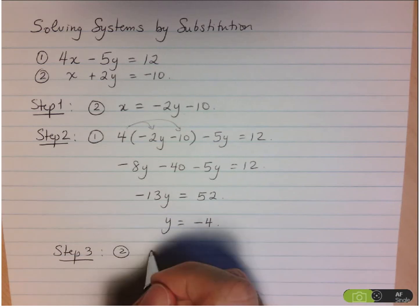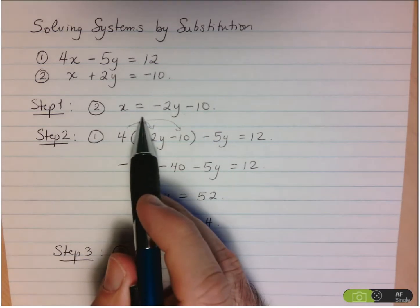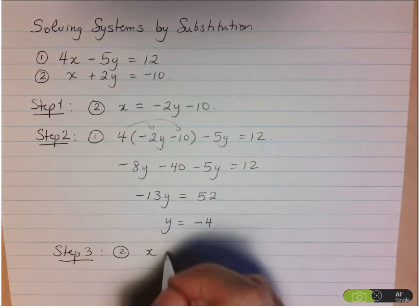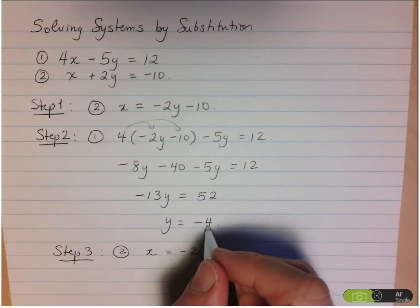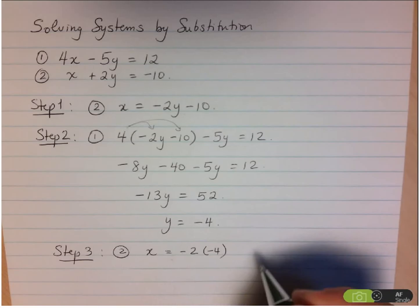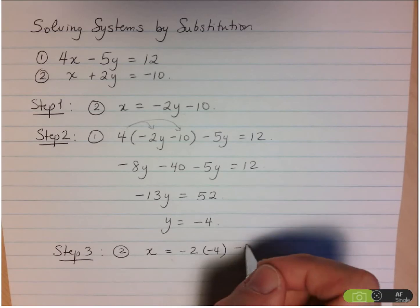And in fact, I've already isolated the x. So that's what I'm going to use. I'm going to use equation 2 again. And I'll actually use this version where I've already isolated the x. So x equals negative 2y. But I know the value of y now, negative 4. And then minus 10.